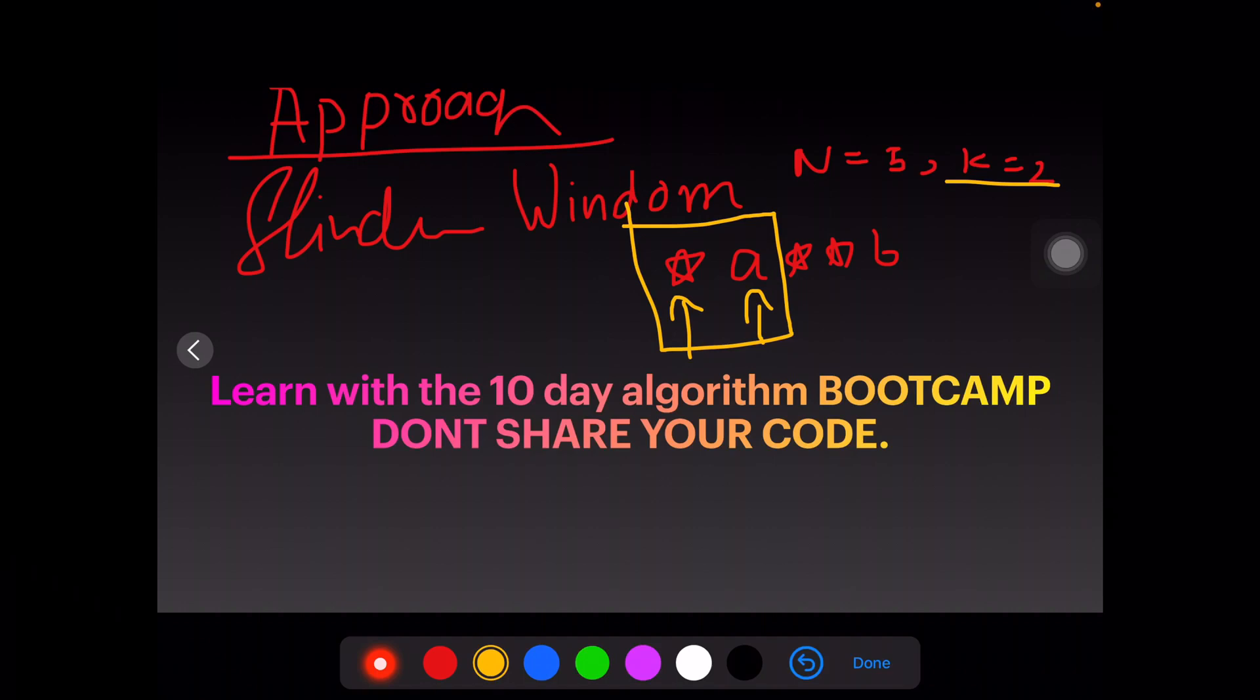Hence k equals 2, whether all the elements in this window are stars or not. If yes, then we'd quit the program and we'd print yes in the console. If no, we proceed by sliding our window. We slide our window, now our new window becomes the green one.